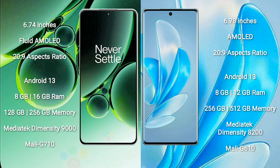OnePlus Nord 3 runs on the Android 13 operating system. Vivo A70 Pro also runs on Android 13. OnePlus Nord 3 comes with 8GB or 16GB RAM and 128GB or 256GB internal storage, with a MediaTek Dimensity 9000 processor and GPU Mali-G710. Vivo A70 Pro comes with 8GB or 12GB RAM and 256GB or 512GB internal storage, with a MediaTek Dimensity 8200 processor and GPU Mali-G610.